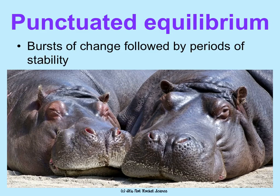Punctuated equilibrium is kind of the opposite — it is bursts of evolutionary change followed by periods of relative stability. This picture of hippos is here because it is believed that the evolution of different land mammals, as well as mammals that live in water, occurred in bursts of change after the existence of dinosaurs and the catastrophic events that caused their extinction. So different from gradualism, it's caused by these rapid bursts of change.